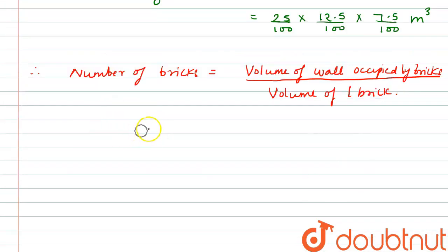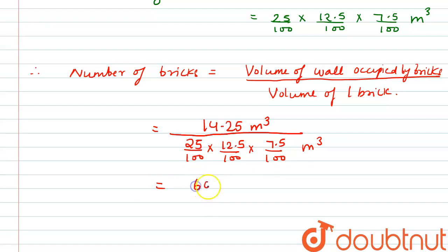By putting the values, we have the number of bricks as: volume of the wall is 14.25 meter cube divided by volume of each brick, 25 by 100 multiplied by 12.5 by 100 multiplied by 7.5 by 100 meter cube. So the number comes out to be 6080.